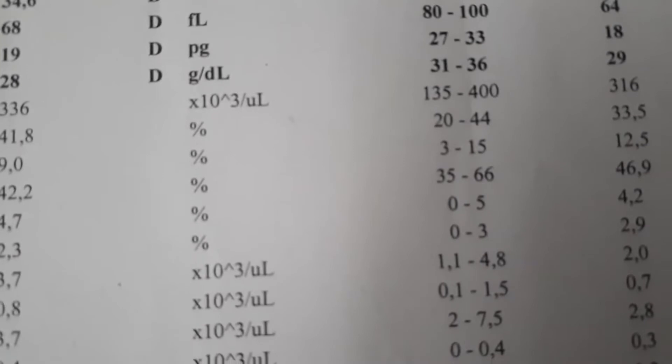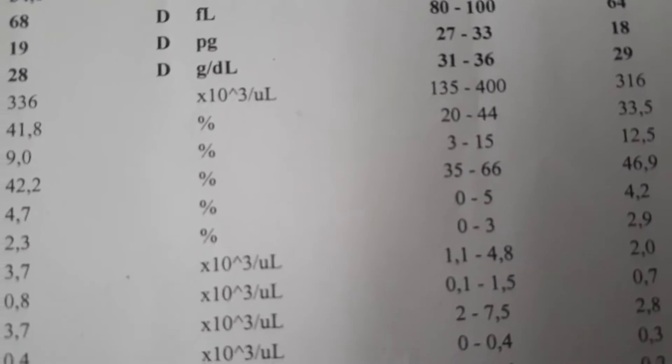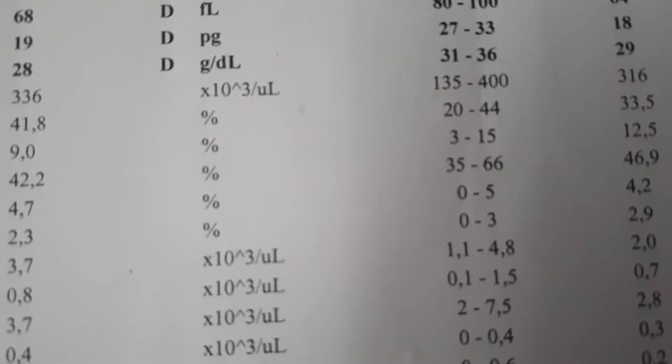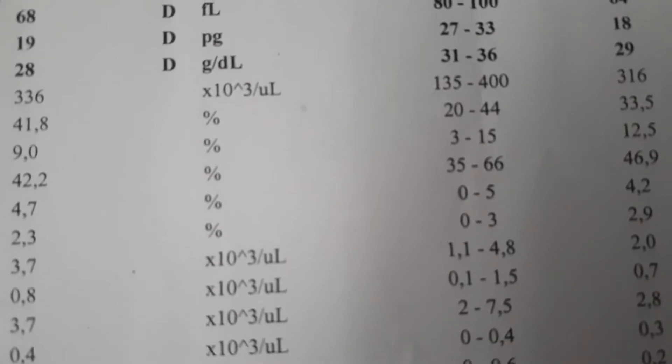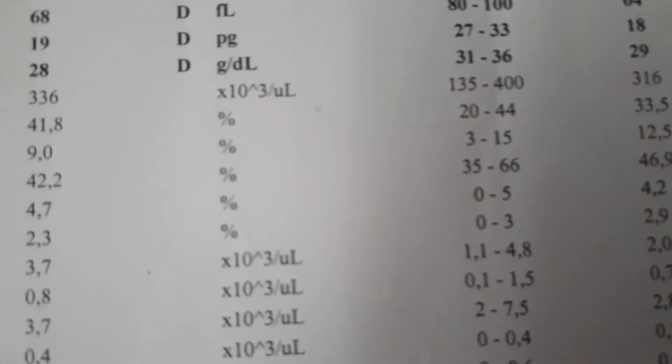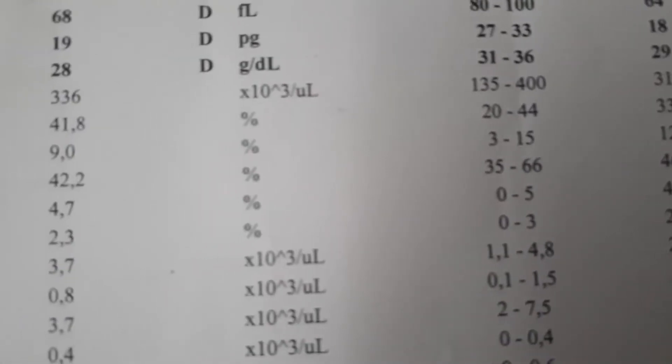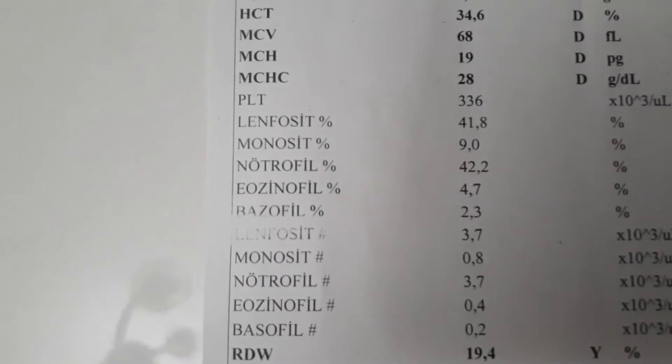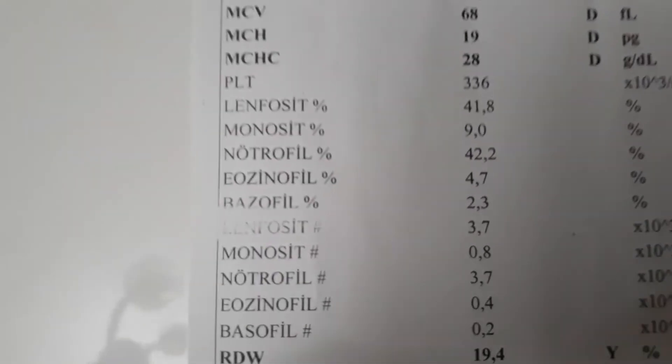Low monocyte may indicate immune deficiency. Monocyte levels may decrease in autoimmune diseases such as rheumatoid arthritis and lupus, newly started viral infections, excessive stress, B12 deficiency, tuberculosis, and leukemia. Neutrophil is a type of leukocyte, just like monocytes.